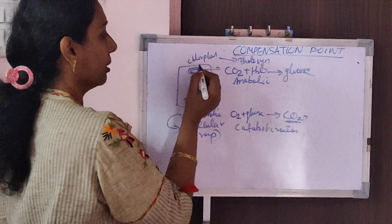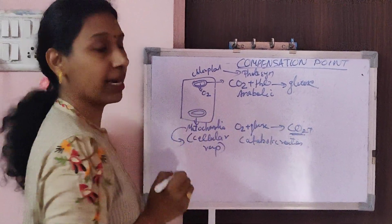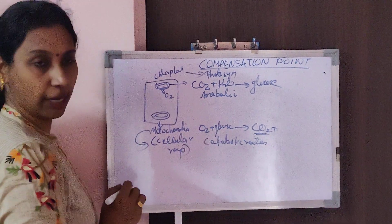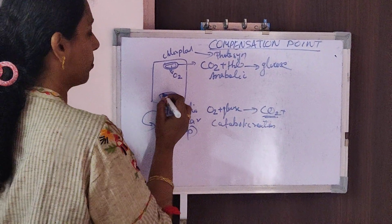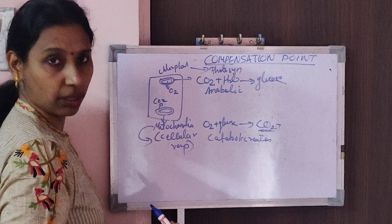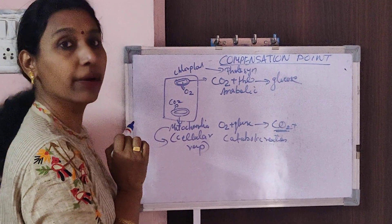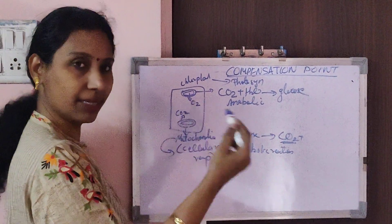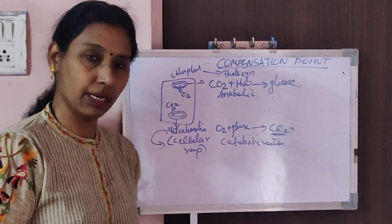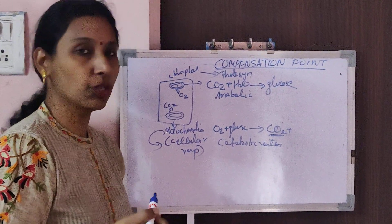If you observe carefully, the chloroplast after photosynthesis releases oxygen as a waste product, whereas in the case of mitochondria, as a result of cellular respiration, carbon dioxide is released as a waste product. So inside the cell, they are preparing raw materials for each other — the oxygen released by the chloroplast can be utilized by the mitochondria, and the carbon dioxide released by mitochondria can be utilized for photosynthesis. But this is not always the case, because photosynthesis depends upon the intensity of light.